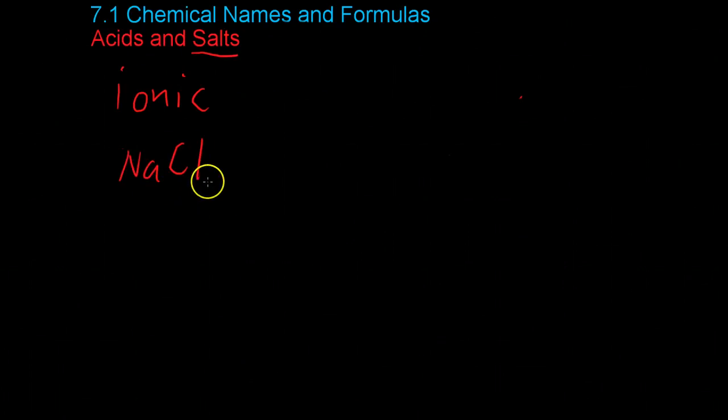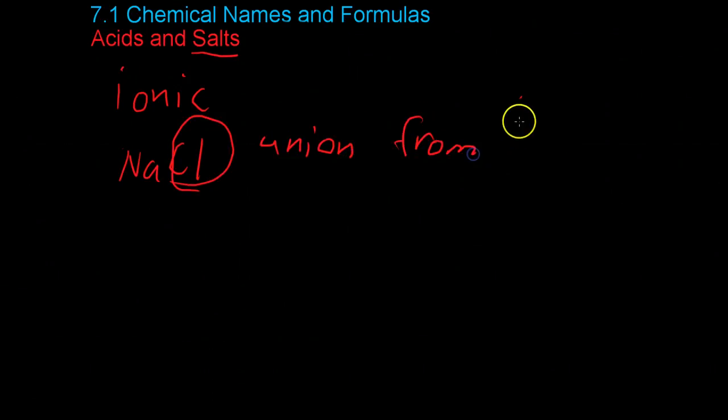Now, salts aren't just something you use to flavor your food. They're technically an ionic compound that is composed of a cation as well as an anion that is derived from an acid. So for example, NaCl, which is in fact common table salt as we know it every day, contains a chlorine anion from hydrochloric acid, HCl.